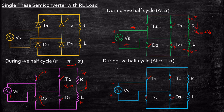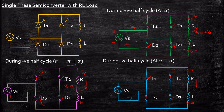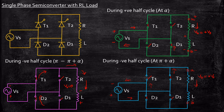During negative half cycle, minus is connected to the anode of T2 and minus is connected to the cathode of D2. So T2 and D2 will conduct, and as a result current starts flowing through this path and through the load. Considering this as A and B, it returns through the source through diode D2. So Vout will still be equal to plus Vs because plus is directly appearing at one terminal and minus is directly appearing at the other terminal through diode D2. As a result, Vout is equal to Vs.